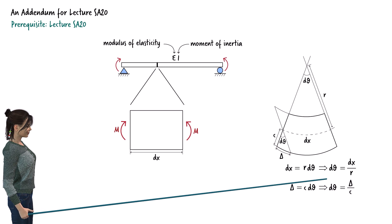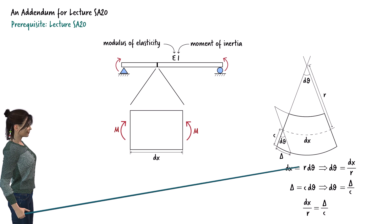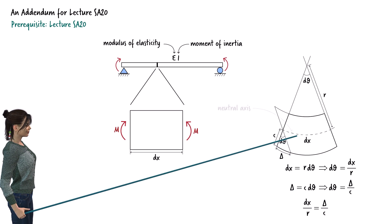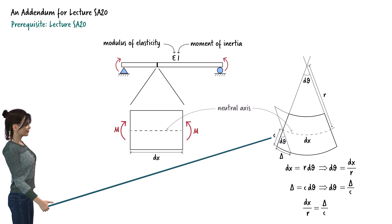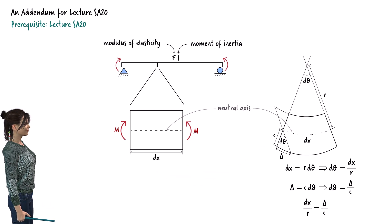From these two equations, we can see that this relationship holds true. By the way, we refer to this axis as the beam's neutral axis. So, c is the distance from the neutral axis to the outer fiber of the segment.